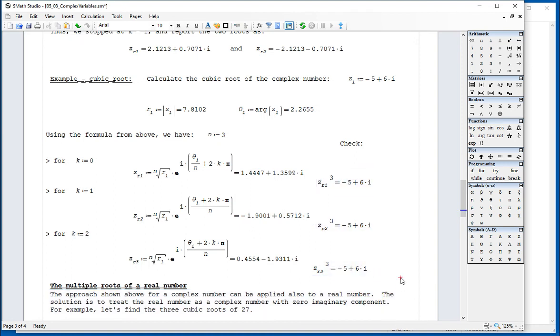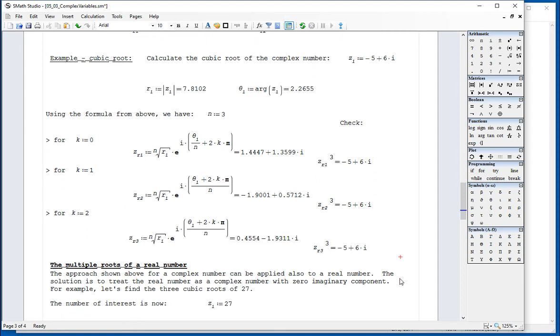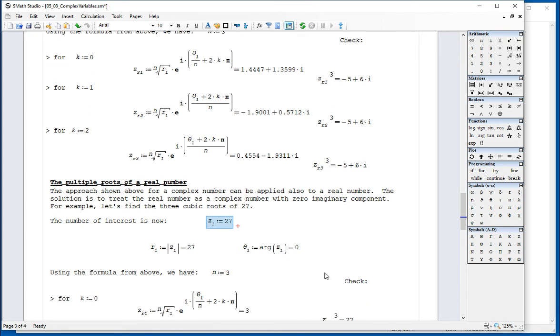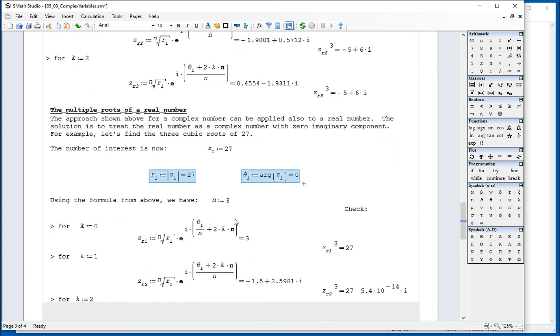Now, these are an approach that I apply for a complex number. A real number is just a complex number with zero imaginary part. And so you could apply the same approach to calculate, for example, the cubic roots of 27. We know that 3 is one of the cubic roots of 27. But because of the use of complex numbers, we're going to find two more cubic roots. And so we calculate those values and apply n equals 3.